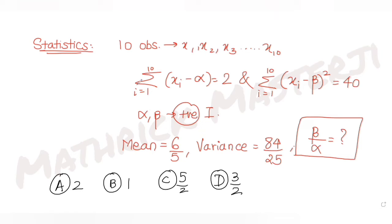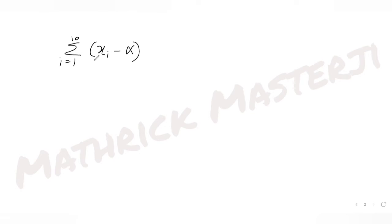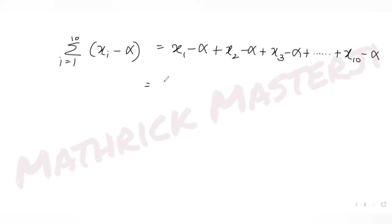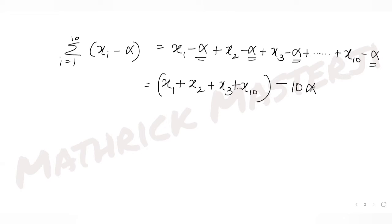Let's talk about the solution now. I have been given two conditions — let's analyze them first. For summation of i equals 1 to 10 of (xi minus alpha): if I put in all values from x1 to x10, I get (x1 minus alpha) + (x2 minus alpha) + ... + (x10 minus alpha). This simplifies to the sum of all xi minus 10*alpha, and this is given as 2.